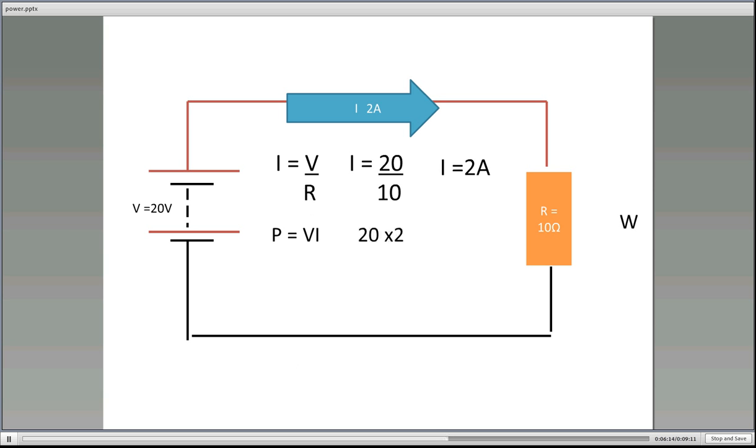Now, have a think about this. We've doubled the voltage, which means we've doubled the current. If we've doubled the voltage, double the current, then the power is going to go up by how much do you think? It's gone to 40 watts. So it went originally from 10 watts up to 40 watts. That means that power has gone up by how much?